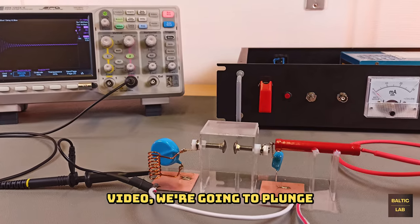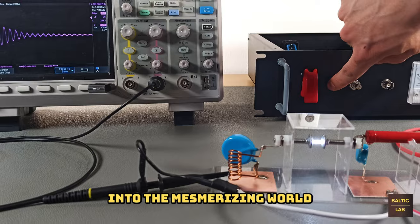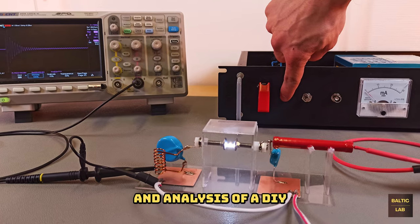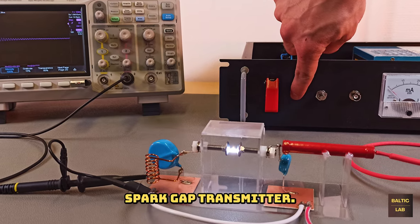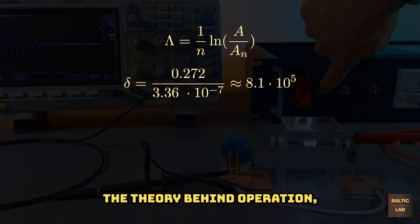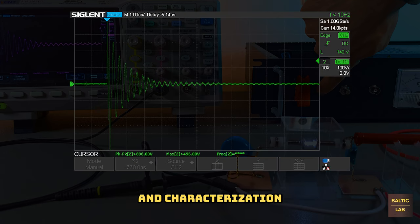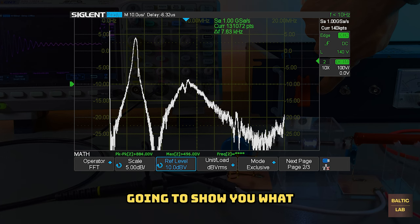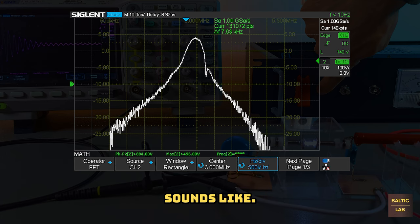In today's video we're going to plunge into the mesmerizing world of early radio technology through the assembly and analysis of a DIY spark gap transmitter. I'm going to walk you through the schematic, the theory behind operation, the testing and characterization of the operational circuit, and of course I'm going to show you what the received signal sounds like.